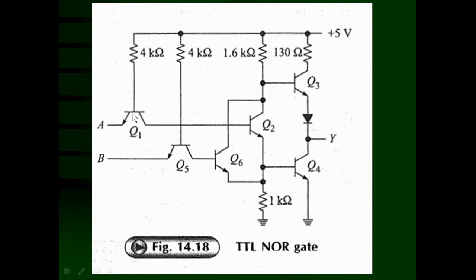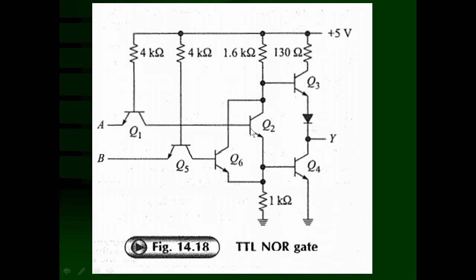Transistor Q1 has only one emitter, meaning it handles input A. Q1 with 4K resistance forms the input stage. Transistors Q2, Q3, and Q4 form the basic NAND gate. Transistor Q5, which is a replica of Q1, is added along with transistor Q6, which is in parallel with Q2. Q2 and Q6 in parallel work as an OR switch, and due to the inherent inversion from the transistor stage, the circuit functions as a two-input NOR gate. Q3 and Q4 form the totem pole arrangement.